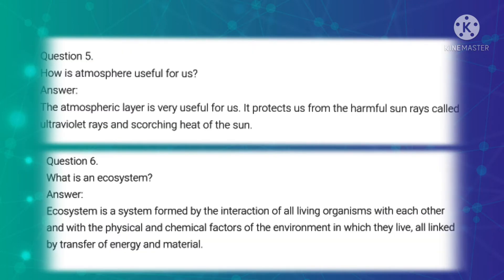Fifth question: How is the atmosphere useful for us? Answer: The atmospheric layer is very useful for us. It protects us from the harmful sun rays called ultraviolet rays and the scorching heat of the sun. Sixth question: What is ecosystem? Answer: Ecosystem is formed by the interaction of all living organisms with each other.